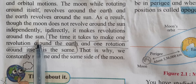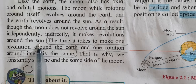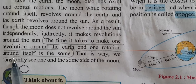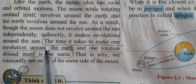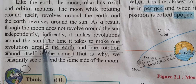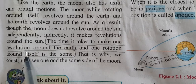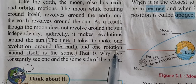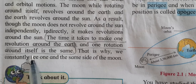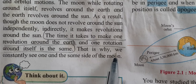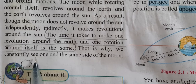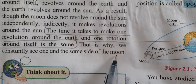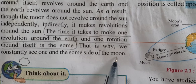So indirectly, the moon is revolving around the sun. The time it takes to make one revolution around the earth and one rotation around itself is the same. That is why we constantly see one and the same side of the moon.